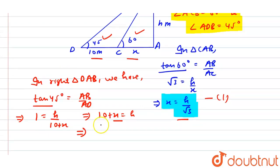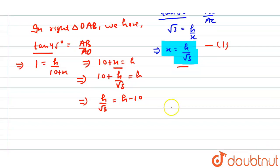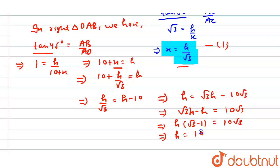Substituting x = h/√3 from Equation 1, we get 10 plus h/√3 equals h. This implies h/√3 equals h minus 10, which gives h equals √3·h minus 10√3. Therefore √3·h minus h equals 10√3, and taking h common: h(√3 minus 1) equals 10√3.